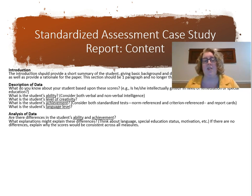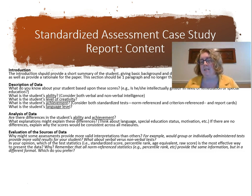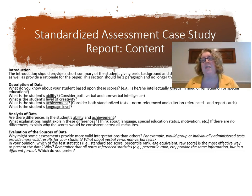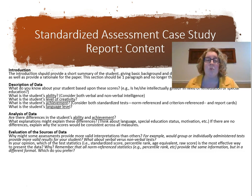Next, evaluate the sources of data. Think about why you might trust the WISC more than the CogAT — for example, if a student has ADHD, the WISC score is more important because the student attends better one-on-one. If there are no disabilities, the difference between CogAT and WISC may not matter much. For English language learners, the TONI non-verbal score is more reliable and valid. Also discuss whether grades or FSA scores better indicate performance, and which test statistics — standard scores or percentile ranks — you would report to parents and why.